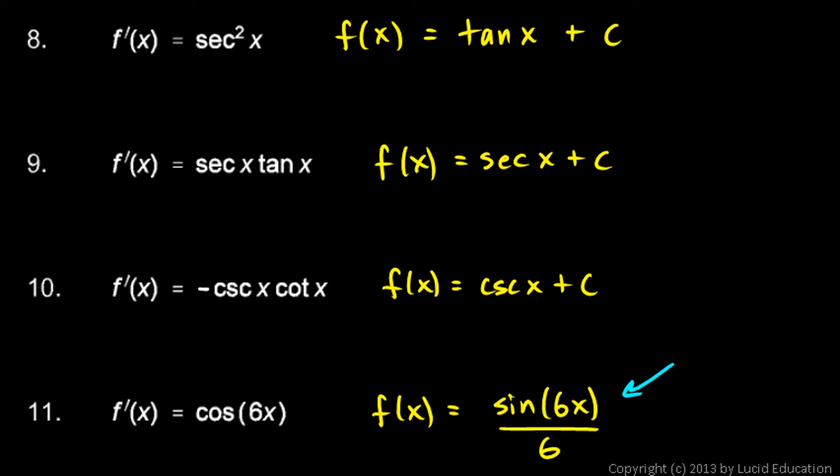Now try taking the derivative of this and you should get that the derivative is going to be one-sixth—because this sixth stays as a constant multiplier—times the cosine of 6x times 6 by the chain rule. That 6 is the derivative of my inner function.